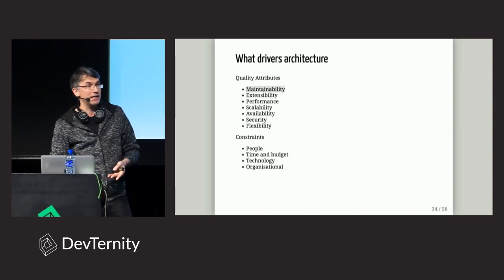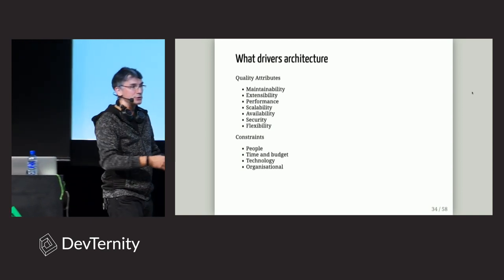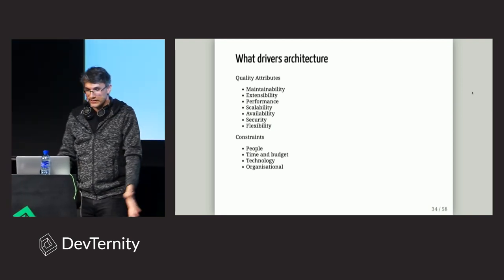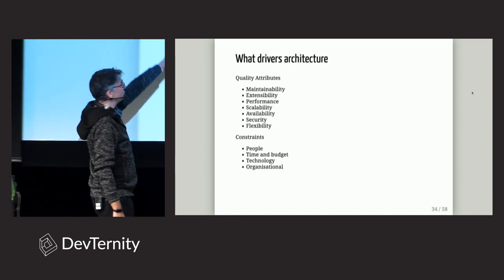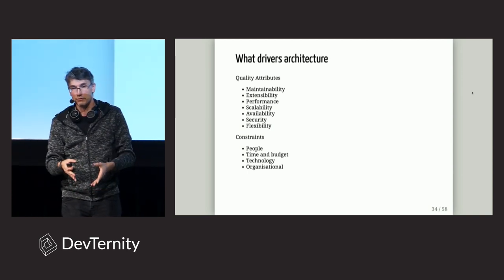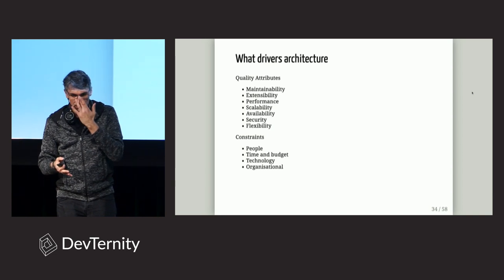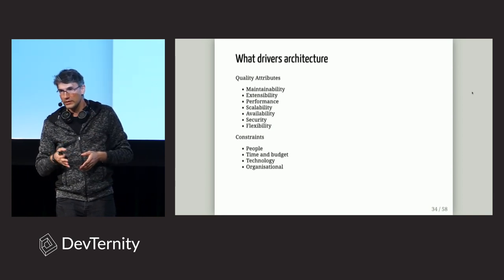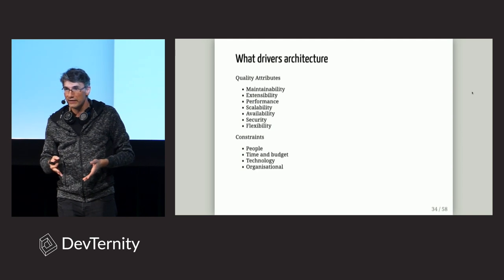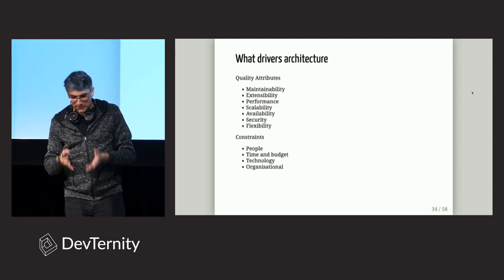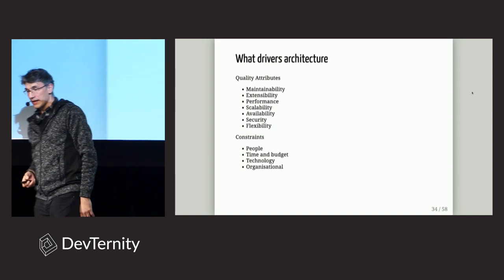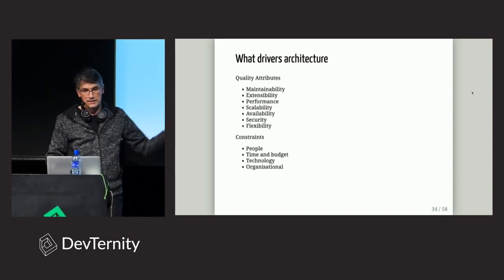Developers don't understand they have to optimize for something different — how much time they spend supporting the things they build. If you spend less time on support, you have more time to develop new things. Then there are constraints. I've seen architectures that were wonderful except they didn't work in the company people were working in. Just because, for example, in Croatia about seven years ago there were only 25 Scala developers. So if you think you can build a company based on Scala, you can grow to 25 people and that's over.